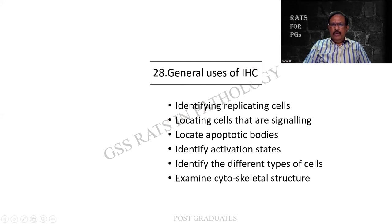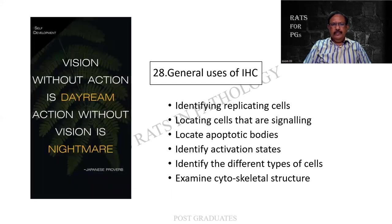The general uses of immunohistochemistry: one, in identifying the replicating cells; locating cells that are signaling; locating apoptotic bodies; identifying activation sites; identifying the different types of cells; and examining the cytoskeletal structures. These are other uses other than diagnosis of cancer itself. As a Japanese proverb notes: 'Vision without action is a daydream. Action without vision is a nightmare.'